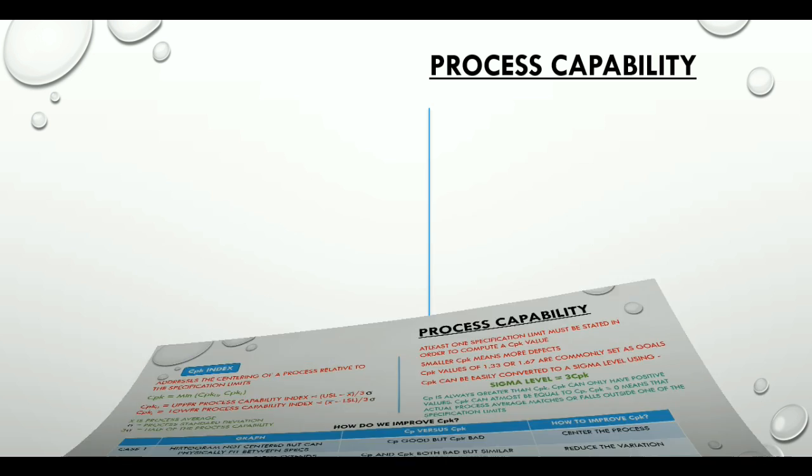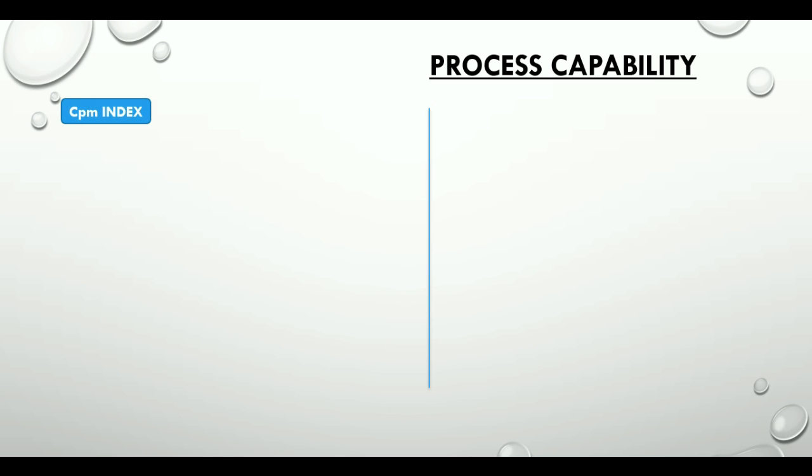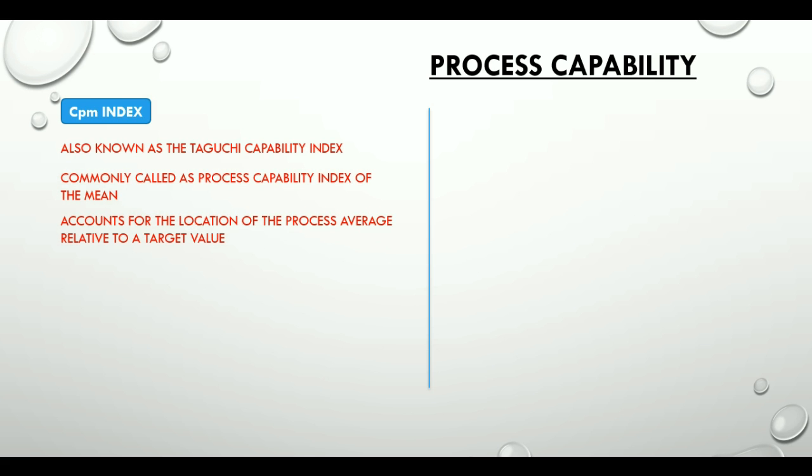The third process capability index is the CPM, also known as the Taguchi Capability Index or commonly called as Process Capability Index of the Mean. It accounts for the location of the process average relative to target value. It assumes a normally distributed process output and uses the sample standard deviation calculation for sigma.